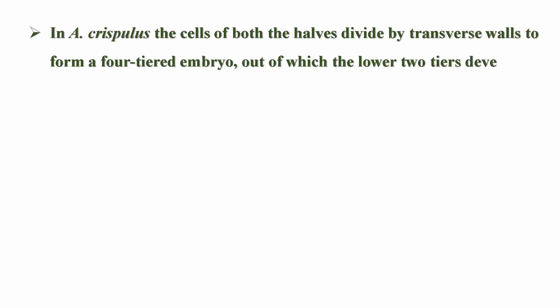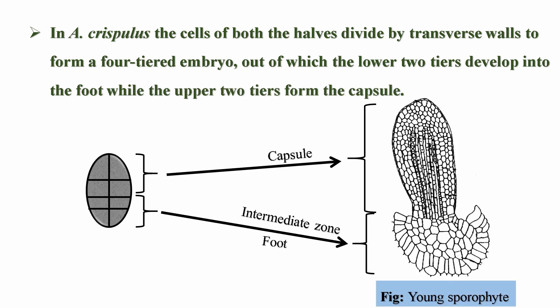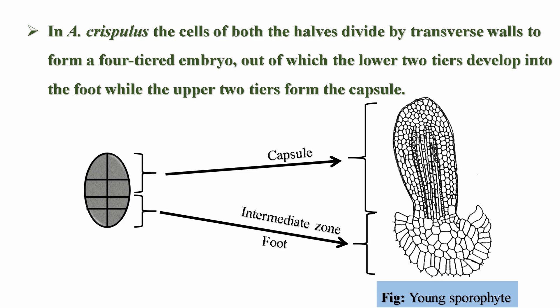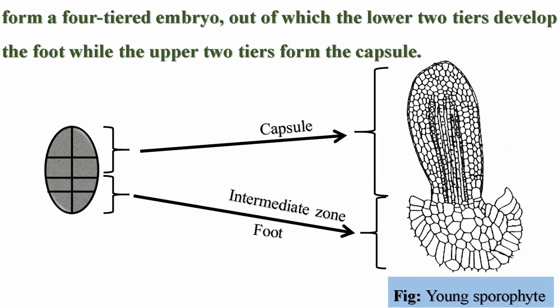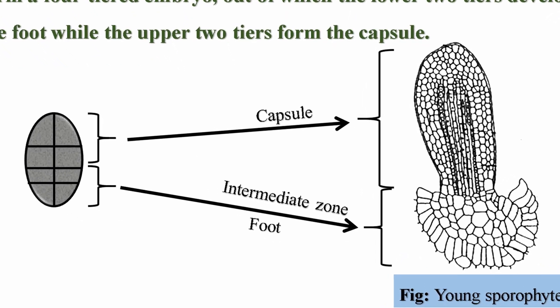The uppermost tier develops into the capsule and the medium tier gives rise mainly to the intermediate zone and some part of the foot. In the context of anthoceros crispulus, the cells of both the halves divide by transverse wall to form a four-tiered embryo, out of which the lower two tiers develop into the foot while the upper two tiers form the capsule.